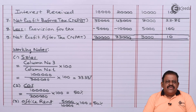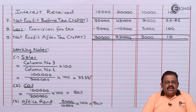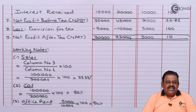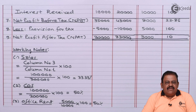Thus, with the given profit and loss account, we have prepared the vertical income statement and also the comparative income statement. The key thing to remember in this question is how to calculate the percentage values — that is the only important part. Thanks for watching. Stay tuned with Ikeda and subscribe to our channel.